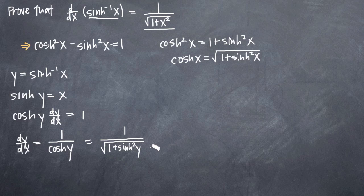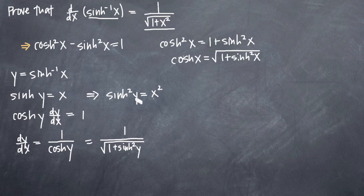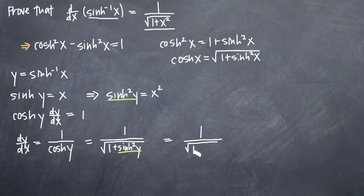All we need now is a way to simplify hyperbolic sine squared of y. We do that by going back to the step where sinh(y) = x and squaring both sides, giving us hyperbolic sine squared of y equals x squared. Substituting x squared in, we get 1 divided by the square root of 1 plus x squared. We've shown that the derivative of inverse hyperbolic sine is 1 divided by the square root of 1 plus x squared, proving the identity.